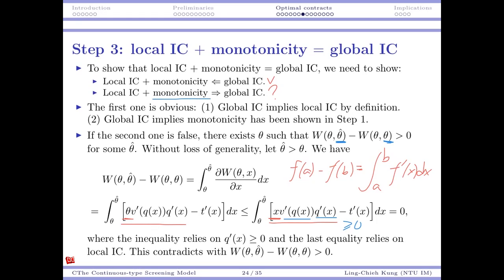With w(theta_0) = 0, the equilibrium utility simplifies to w(theta) = integral from theta_0 to theta of v(q(x)) dx. Rearranging the definition w(theta) = theta·v(q(theta)) − t(theta), we get t(theta) = theta·v(q(theta)) − integral from theta_0 to theta of v(q(x)) dx. At any optimal solution, the transfer t must be a function of q in this way. Now we substitute this expression for t into the objective function and continue.